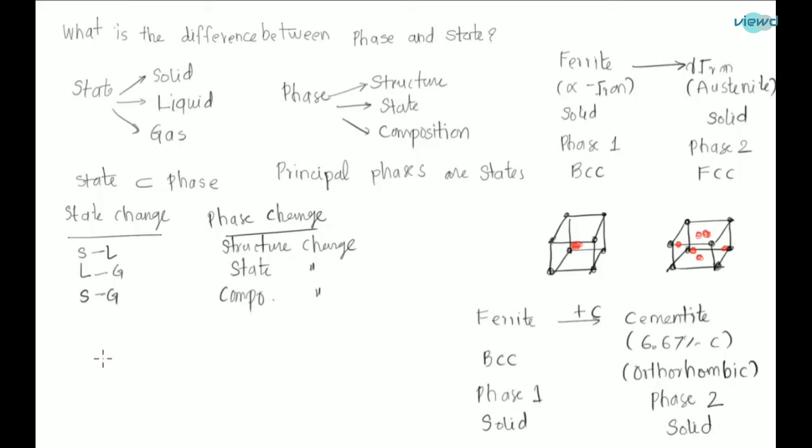And let us see another example. There is delta iron which converts to liquid on heating. Here there is a structure change. This is phase one, this is phase two. And there is state change. State one, state two. So there is phase change and also state change. Here there is phase change but no state change. Here there is also phase change but no state change.